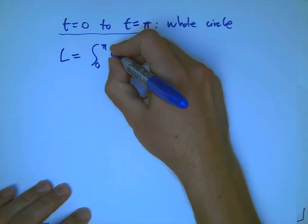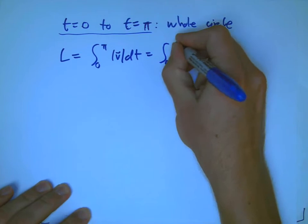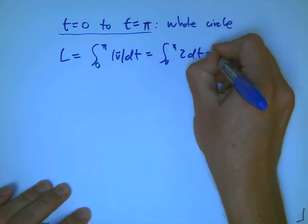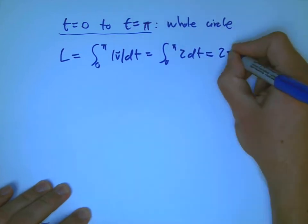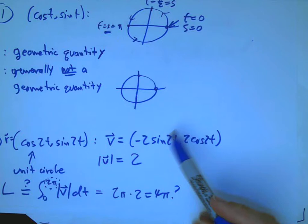So, here, just 0 to pi is the whole circle. So, the length would be 0 to pi, magnitude of v dt, 0 to pi, 2 dt. And that's twice that, length of that interval is 2 pi.